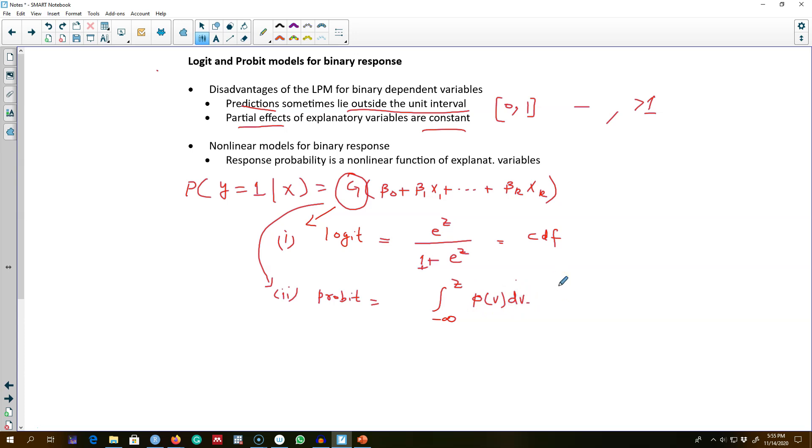Essentially, all we are doing here is assuming that this g, this non-linear function, can either follow a cumulative distribution function for a standard logistic random variable, or it can follow the standard normal CDF in the form of integral. In most cases, both of these models will give you almost identical results.